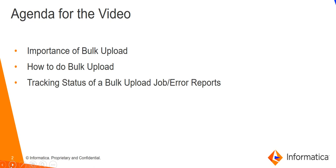Let's start with our first topic — the importance of bulk upload in Axon. We have two ways to create any object: either manually one by one, or using the bulk upload functionality. If you want to create hundreds or thousands of objects, doing it manually would be tedious, time-consuming, and can decrease efficiency. Bulk upload saves time and increases efficiency.